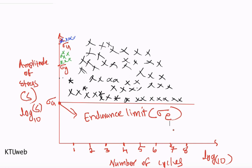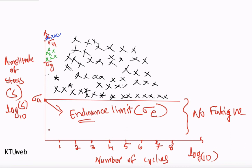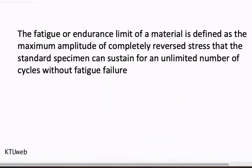What is the peculiarity of endurance limit? Below the endurance limit there will be no fatigue failure — that is the importance of endurance limit. No fatigue failure, no cyclic load failure, no dynamic load failure. So when a material undergoes fatigue failure, endurance limit is the controlling factor. When you design a material under its endurance limit, it can withstand theoretically an infinite number of cycles.